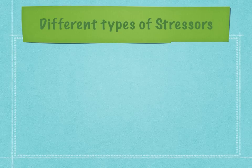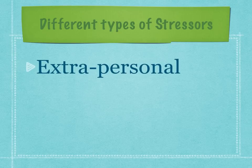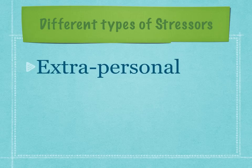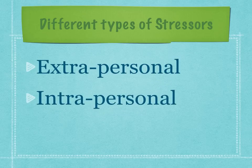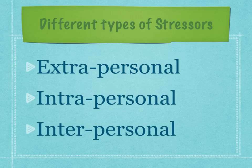Extra-personal stressors are external environment interaction forces that occur outside the boundaries of the client system at a distal range. For example, a patient might be having financial concerns — this would be an example of an extra-personal stressor. Intrapersonal stressors are internal environmental forces that occur within the boundary of the client system, such as autoimmune response or conditioned response. And lastly, interpersonal stressors, which we will look at further in the upcoming slides.